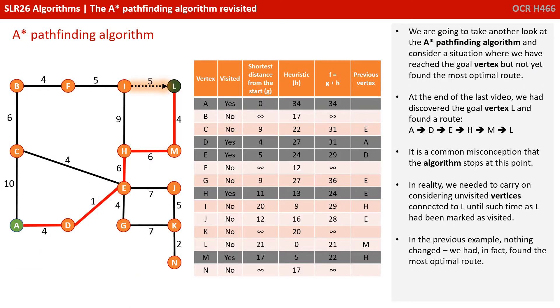We're going to take another look at the A-star pathfinding algorithm and consider a situation where we've reached the goal vertex but not yet found the most optimal route. At the end of the last video, we discovered the goal vertex L and we'd found a route A-D-E-H-M-L, and we said it was a common misconception that the algorithm stopped at that point.